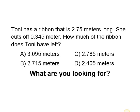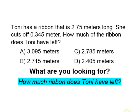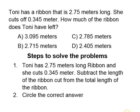What are we looking for? We are looking to find how much ribbon Toni has left. Our steps to solve the problem: step one, Toni has 2.75 meters of ribbon and she cuts it, so in order to find out how much ribbon she has left, we are going to subtract — the total length of the ribbon minus how much she cut. Step two, circle the correct answer.